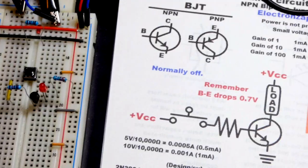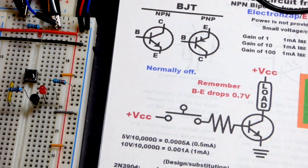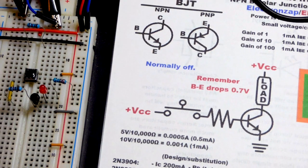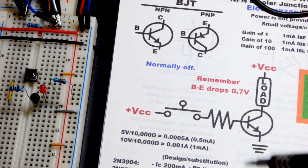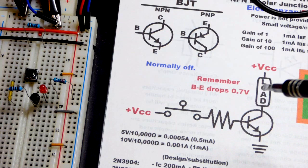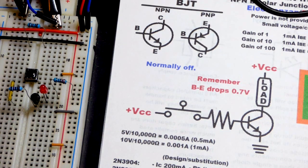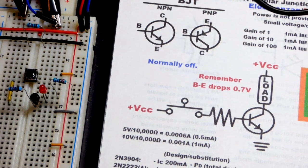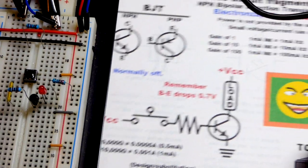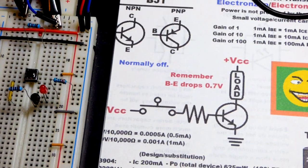Let's just do a quick step-by-step build of using the transistor as a switch. It is pretty straightforward - the load can be anything. It just depends on the setup we use and how much current we are going to need for everything.